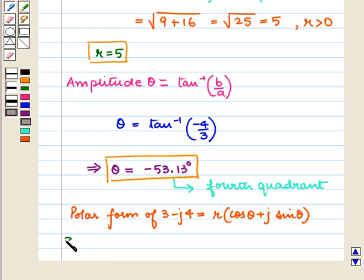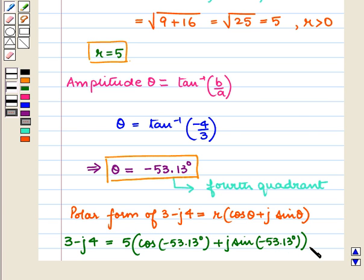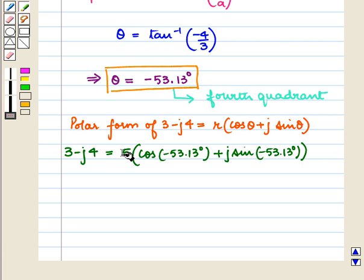When we put the values of r and theta, we get 3 minus j4 is equal to 5 into cos of minus 53.13 degrees plus j sin minus 53.13 degrees. So, this is our required answer.